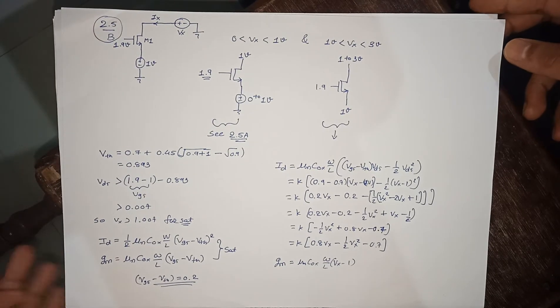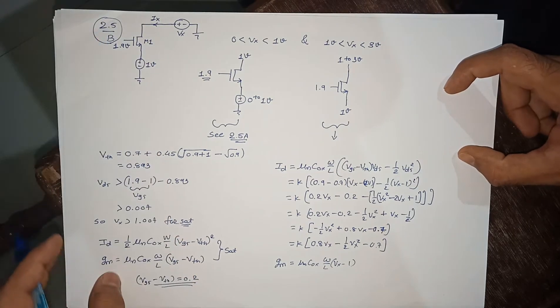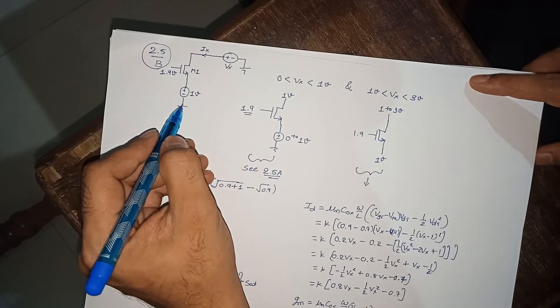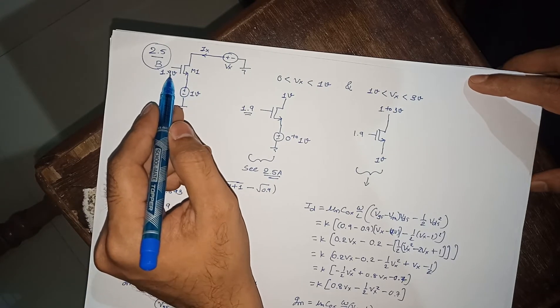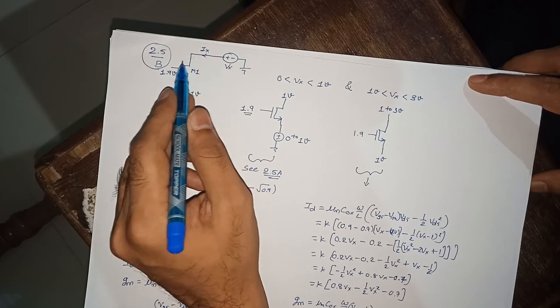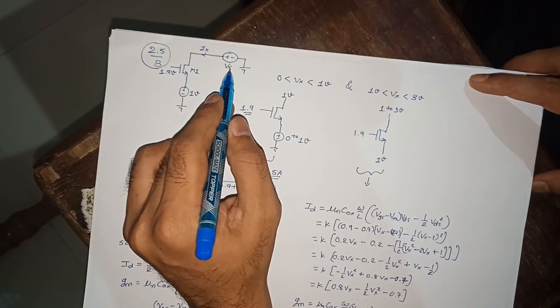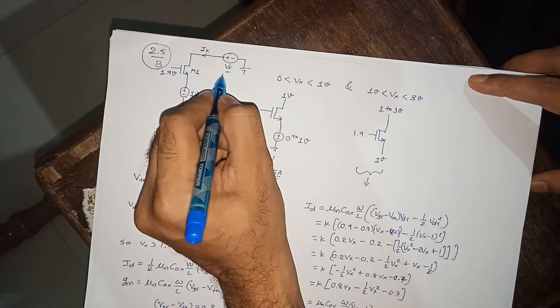Okay, so here we will see the solution of part B of problem number 2.5. Here is the circuit. The source is fixed to 1 volt, the gate is fixed to 1.9 volts. The drain terminal is variable, and that potential is going from 0 to 3 volts.